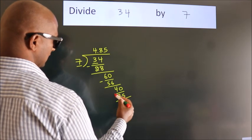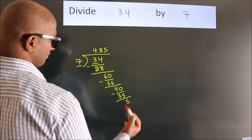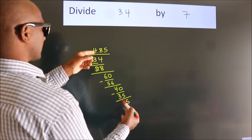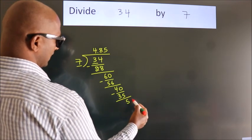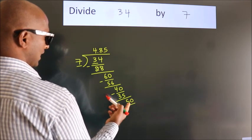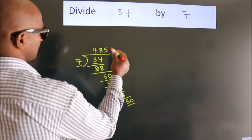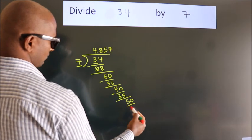Now we subtract and get 5. After this, we already have the decimal, so directly take 0, giving us 50. A number close to 50 in the 7 table is 7×7=49.